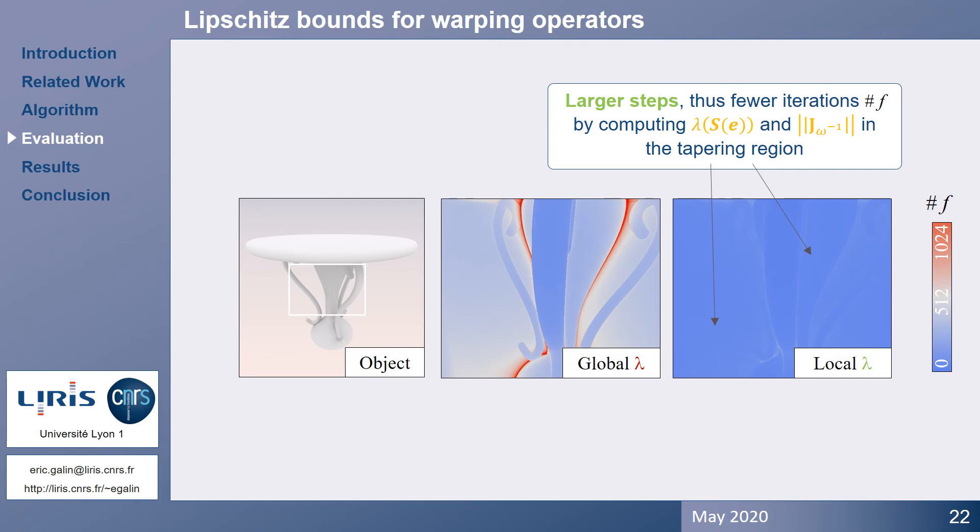This example shows the benefits of computing an accurate local bound for a tapering operator that shapes the stem of the table. With a global bound, many iterations are necessary to check the ray-surface intersection in the tapering region. In contrast, computing a local bound along the stepping segments drastically reduces the number of field function calls.